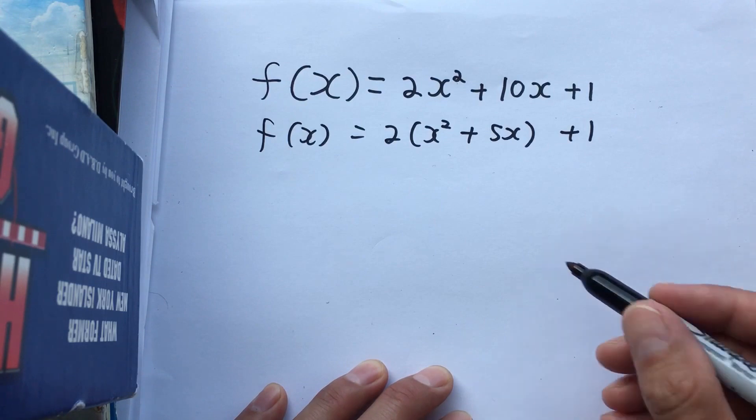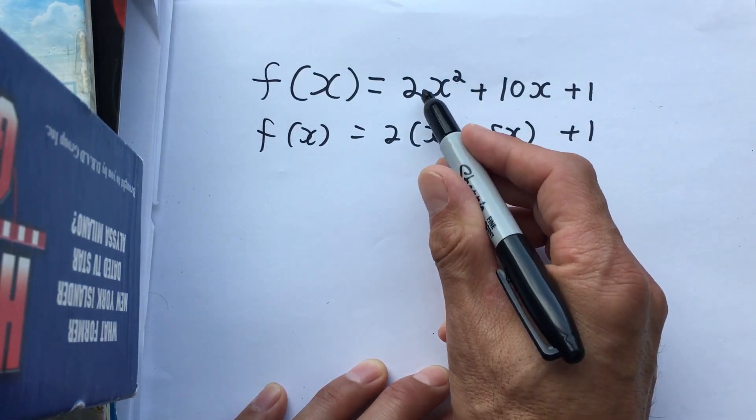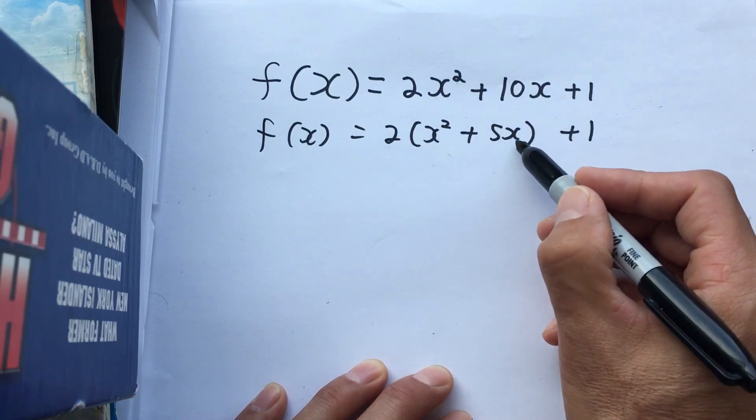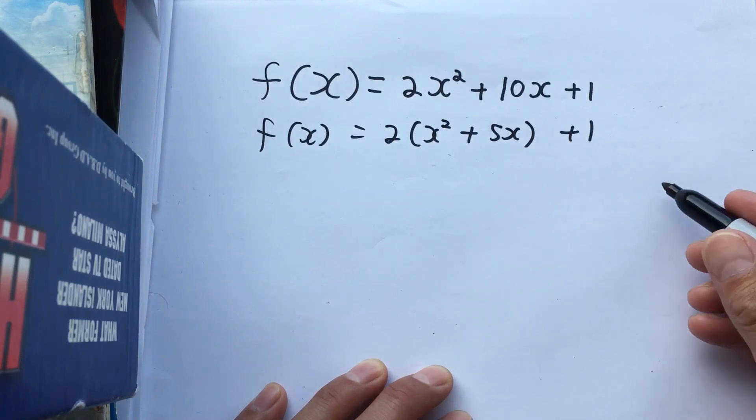If you're unsure whether or not you've got this right, you can just go the other way by multiplying it out. 2 times x² is 2x², and 2 times 5x is 10x. So this line has to be equal to the previous line in all cases.